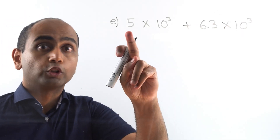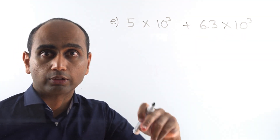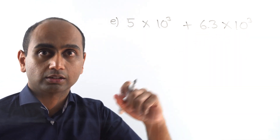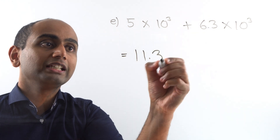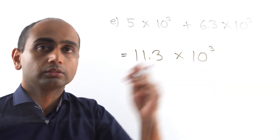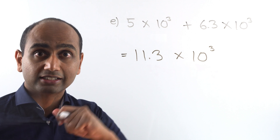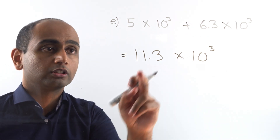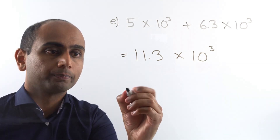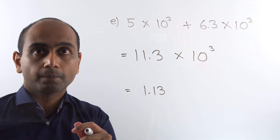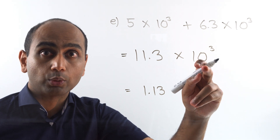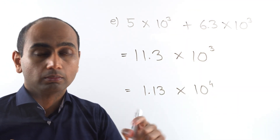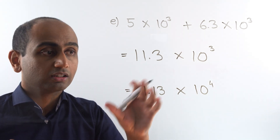Here's question E. I've got 5 times 10 to the power of 3 plus 6.3 times 10 to the power of 3. I've got the same power of 10, so I've got 5 lots plus 6.3 lots, giving me 11.3 lots of 10 to the power of 3. That's the correct value but it's not in standard form because 11.3 is not strictly less than 10. So I divide 11.3 by 10 to get 1.13, and to compensate I multiply 10 to the power of 3 by 10, giving me 10 to the power of 4. So the answer is 1.13 times 10 to the power of 4.